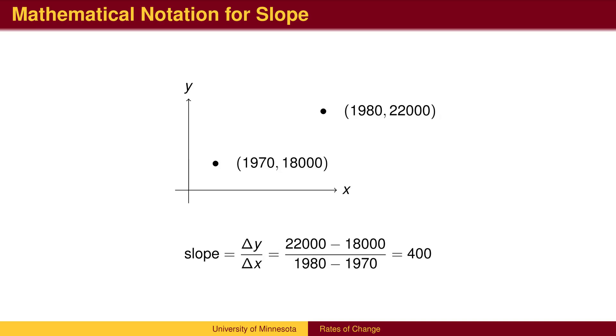In mathematics, we typically use the variables x and y, and the rate of change, called the slope, compares the change in y to the change in x.